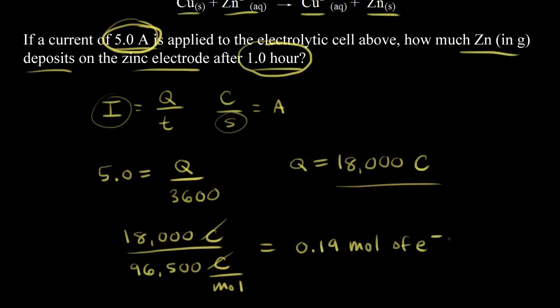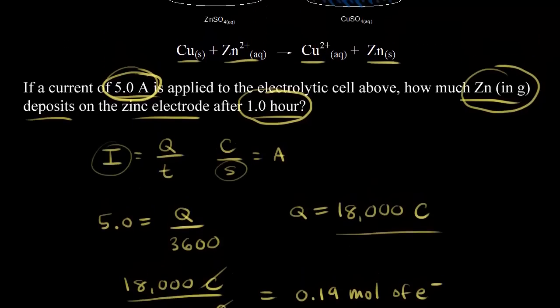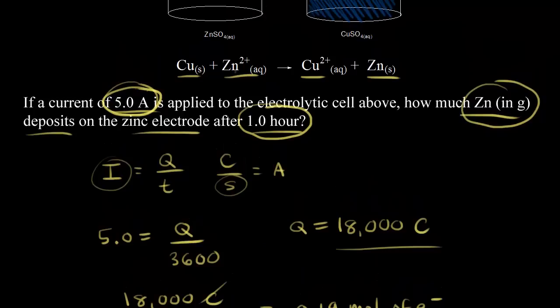So 0.19 moles of electrons were forced through our electrolytic cell because of the battery. Next we need to relate the moles of electrons to the moles of zinc that are formed. We can do that by remembering our reduction half reaction.